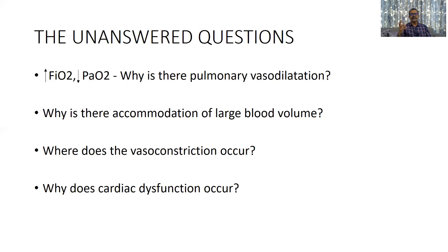So how to explain this sudden pulmonary vasodilation and how the lungs can accommodate such a large volume? Pulmonary hypertension is quite common and treatment is also quite common, but this phenomenon does not happen in ARDS — it happens only in COVID. Why in COVID are they able to accommodate large blood volumes? What is the exact location? In the last session we discussed about the 2.5 mm diameter vessel. What is the evidence for that, and why does cardiac dysfunction occur in these patients?